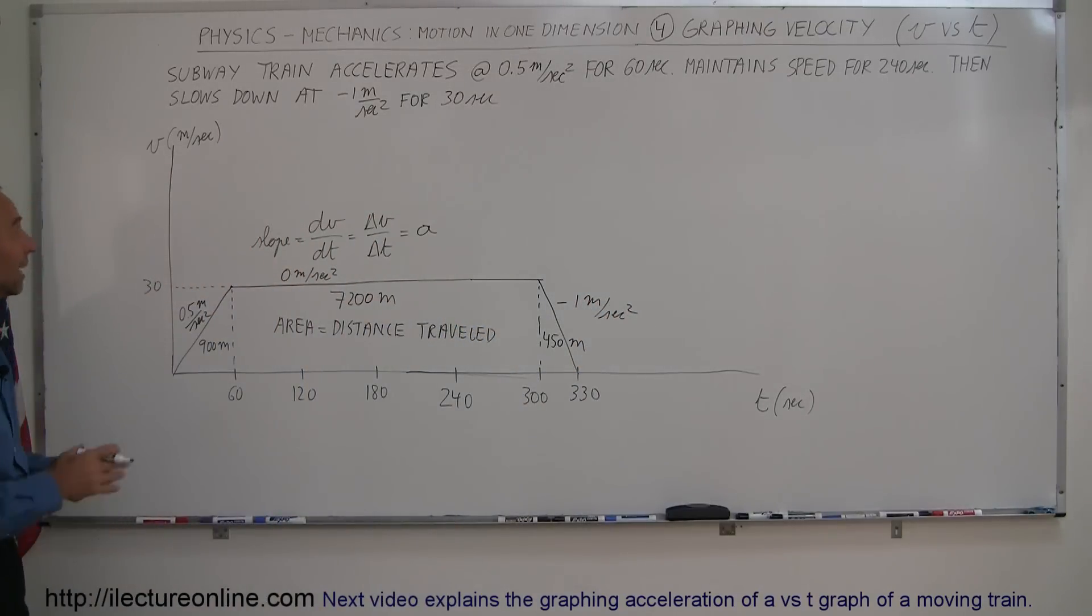And that's how you draw a velocity versus time graph for an object that starts from rest, accelerates, maintains speed, decelerates, comes back to rest. That's how you do that.